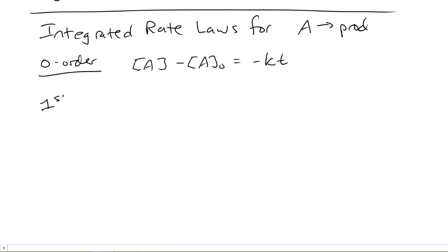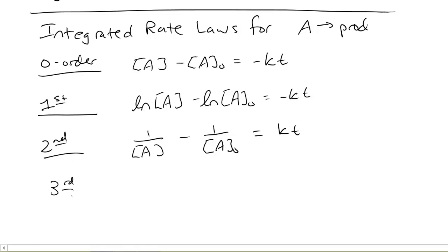We could do this for first order. When we do first order, we find that the natural log of A minus the natural log of A-naught is equal to minus kT. For second order, we find 1 over A minus 1 over A-naught is equal to positive kT. And finally, for third order, we find 1 over A squared minus 1 over A-naught squared is equal to 2 kT.